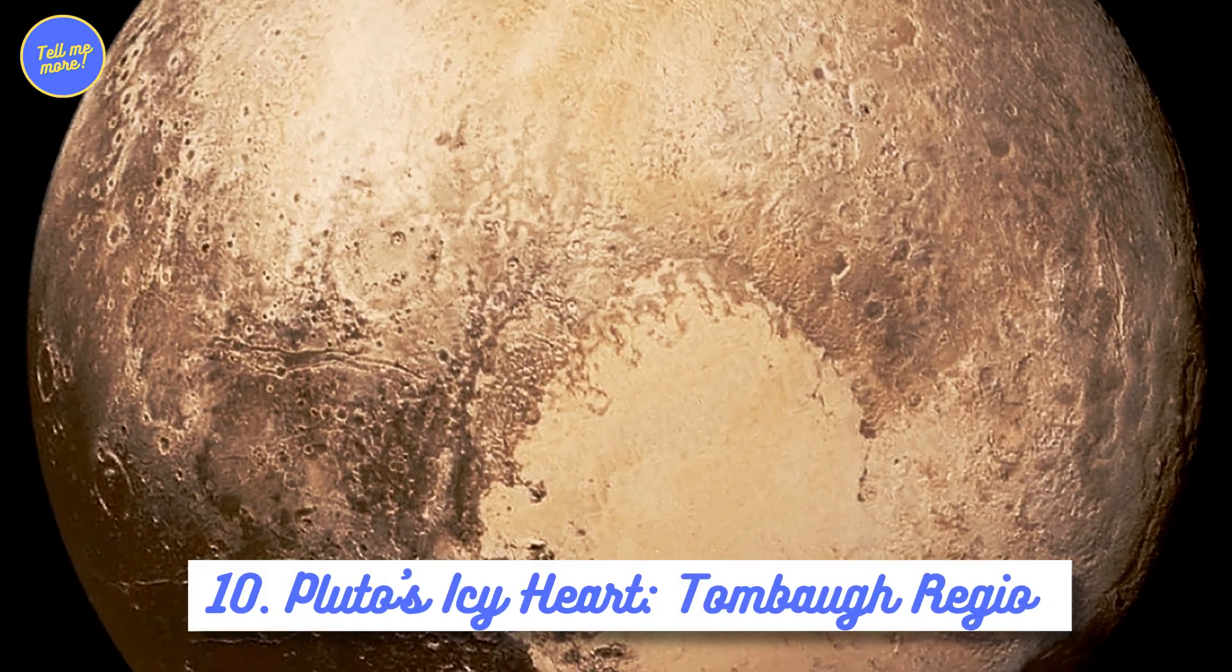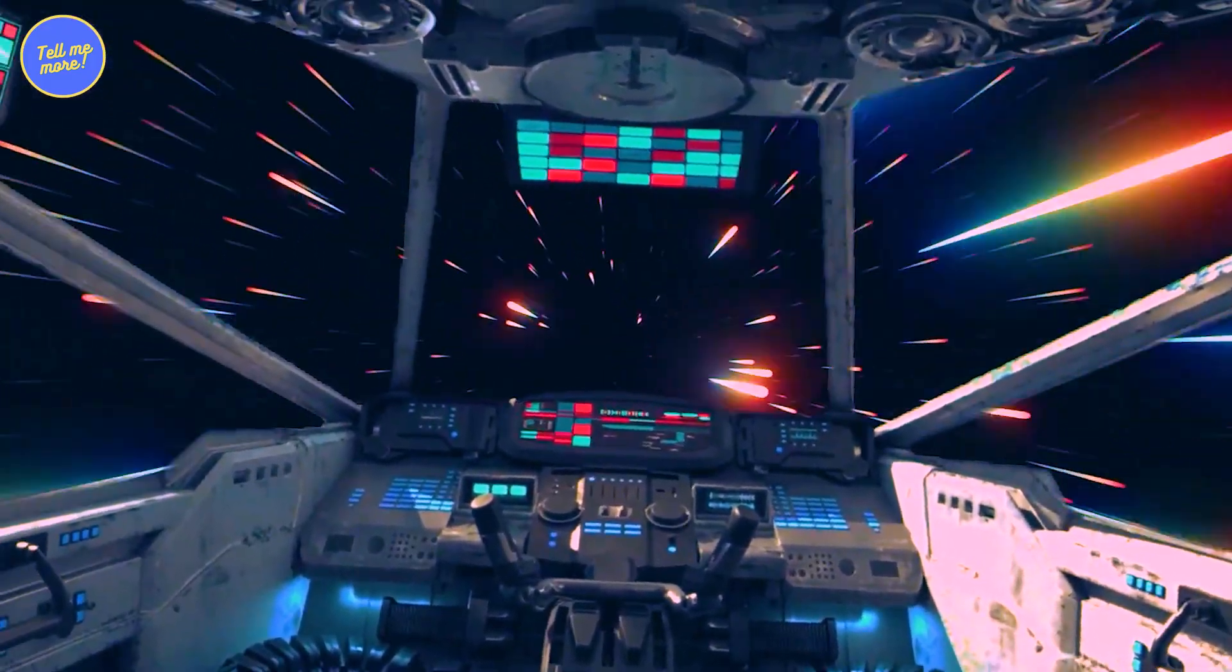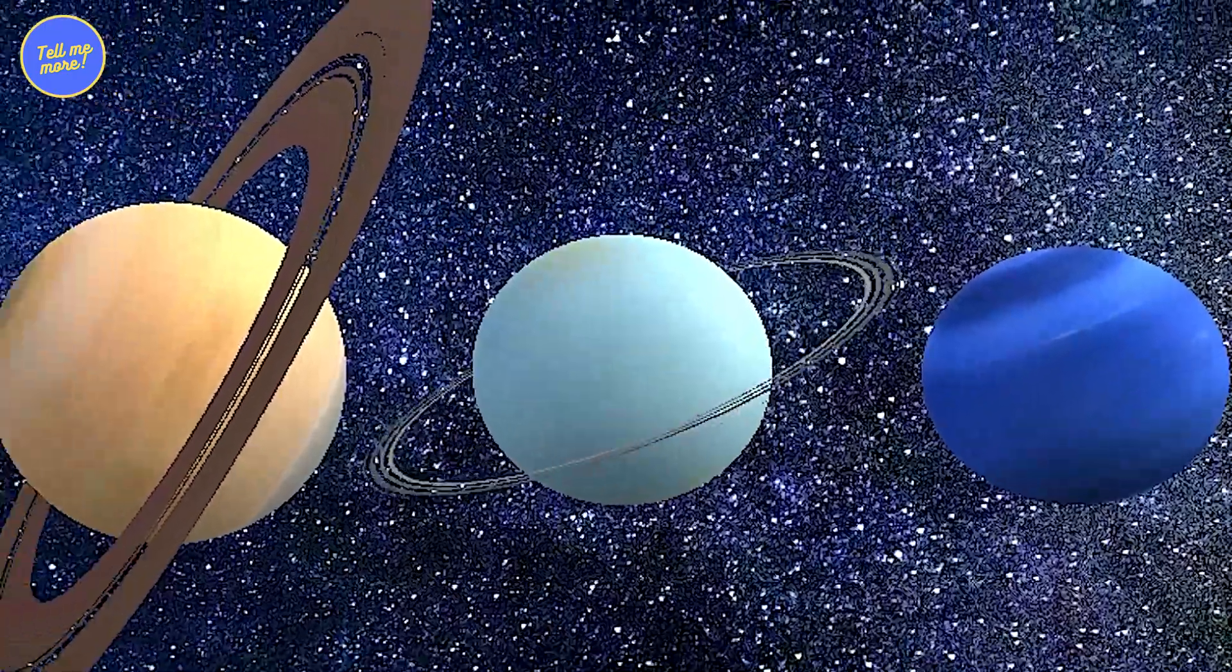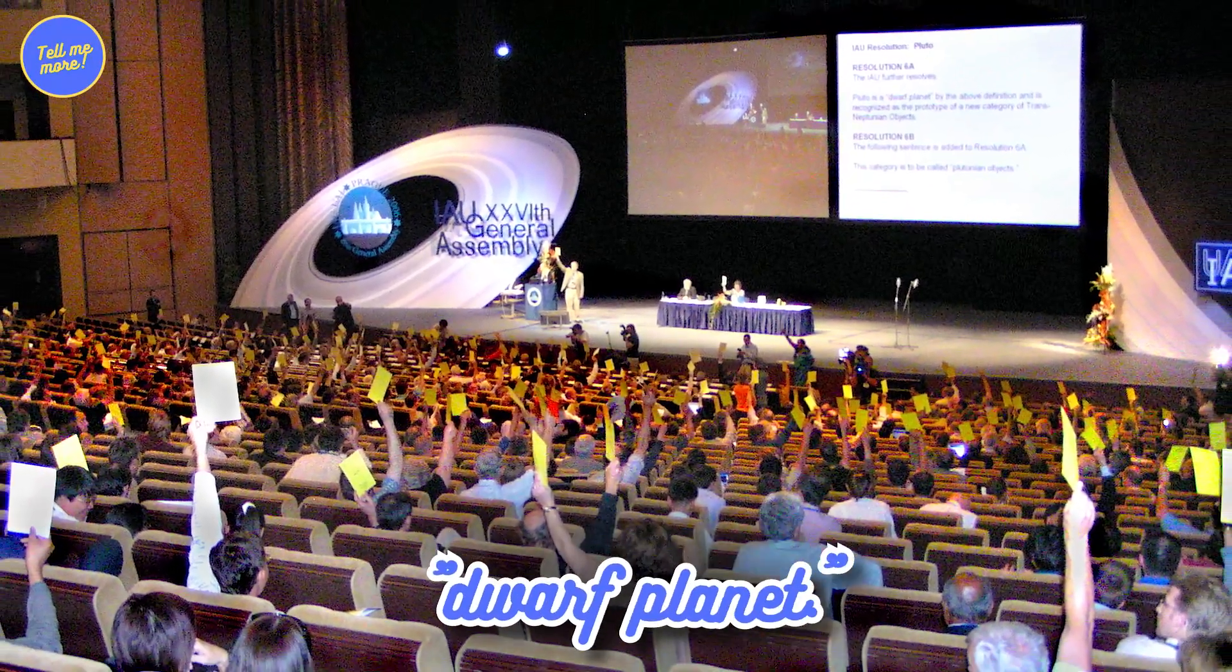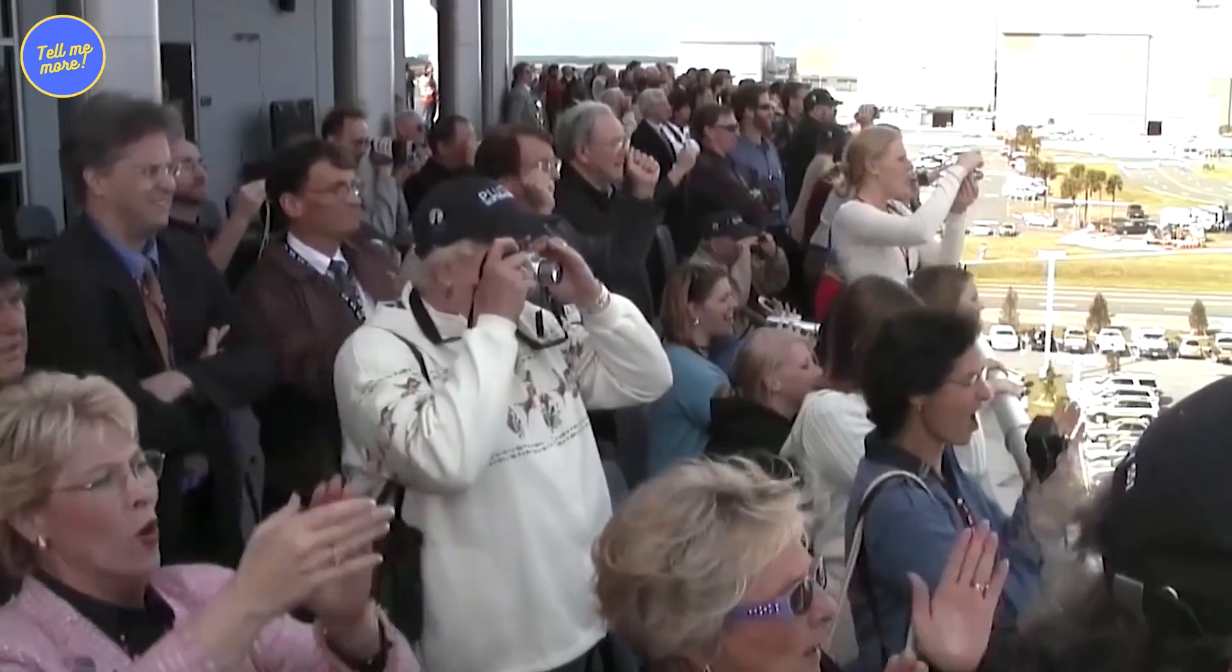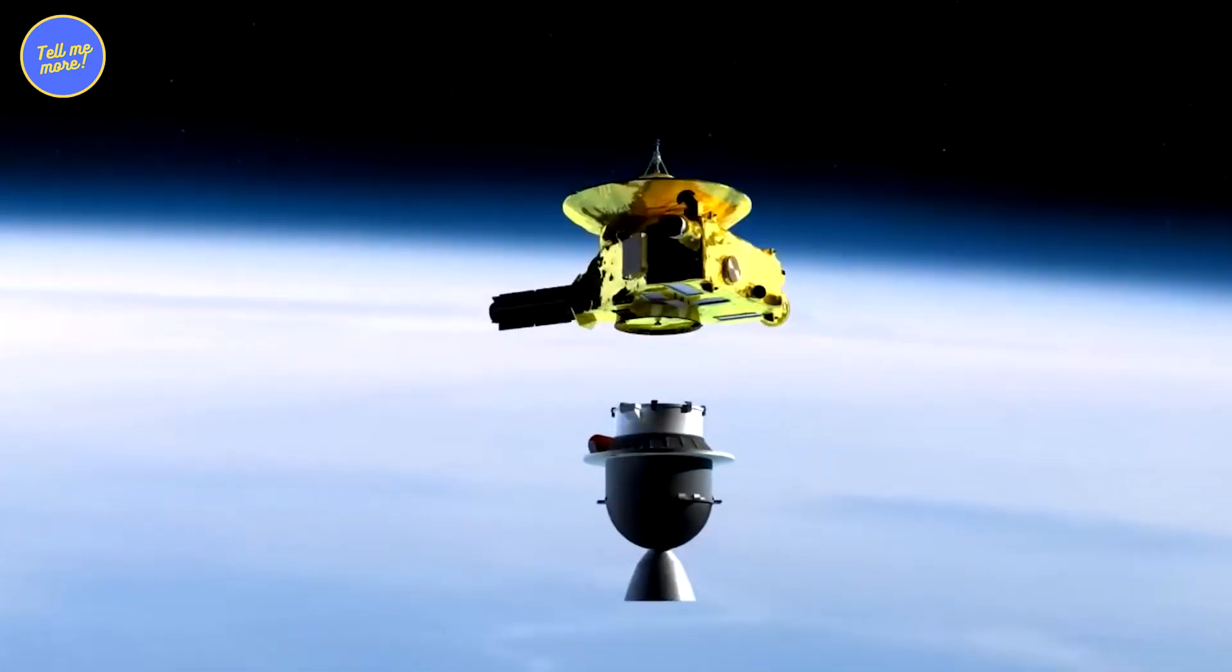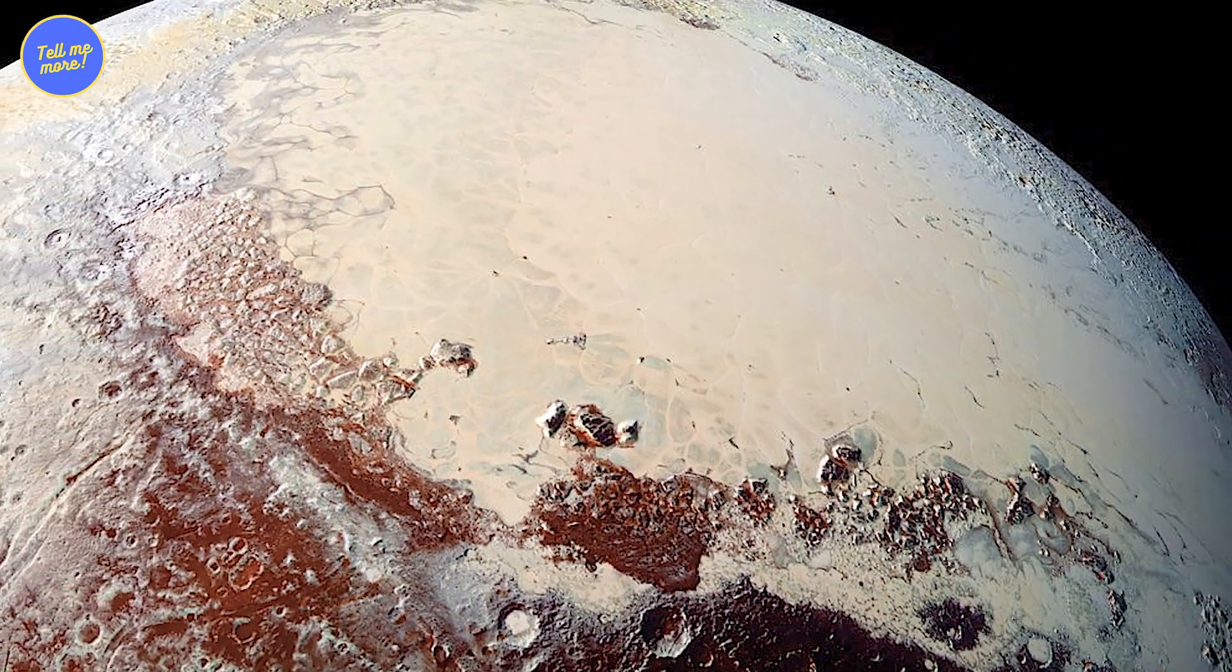10. Pluto's Icy Heart, Tombaugh Regio. Buckle up for a cosmic roller coaster. Back in the day, Pluto was everyone's favorite ninth planet. But in 2006, the International Astronomical Union decided to reclassify it as a dwarf planet. Cue the gasps and protests from Pluto fans worldwide. Fast forward to 2015, and New Horizons spacecraft swoops in for the ultimate plot twist. It does a flyby of Pluto, giving us jaw-dropping close-ups of its surface.